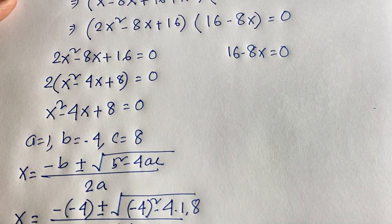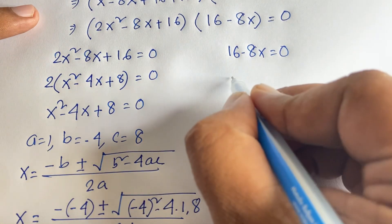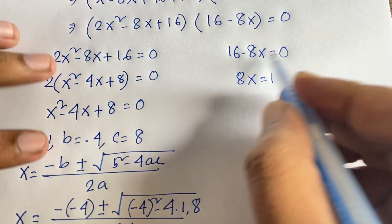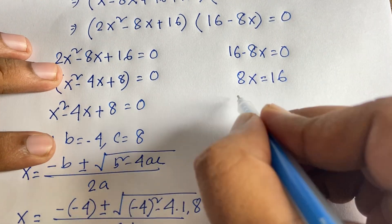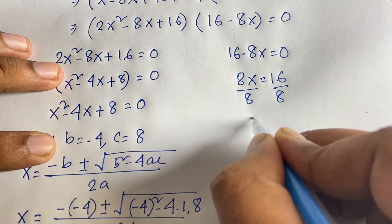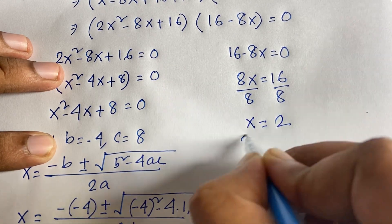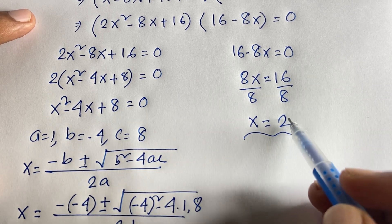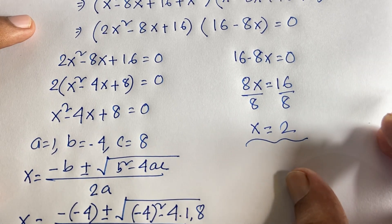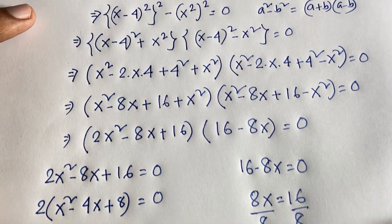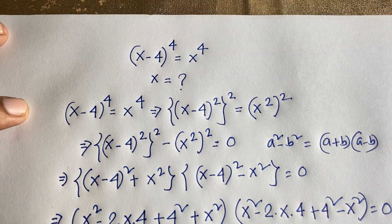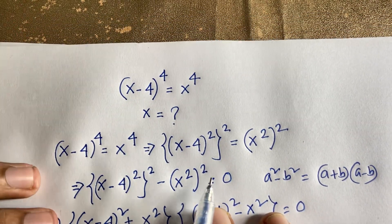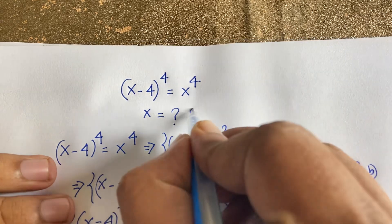For Case 2: 16 minus 8x equals 0, so 8x equals 16, and dividing both sides by 8 gives x equals 2. This is our real solution. Let's verify: substituting x equals 2 into the original equation gives (2 minus 4) to the power 4 equals 2 to the power 4.